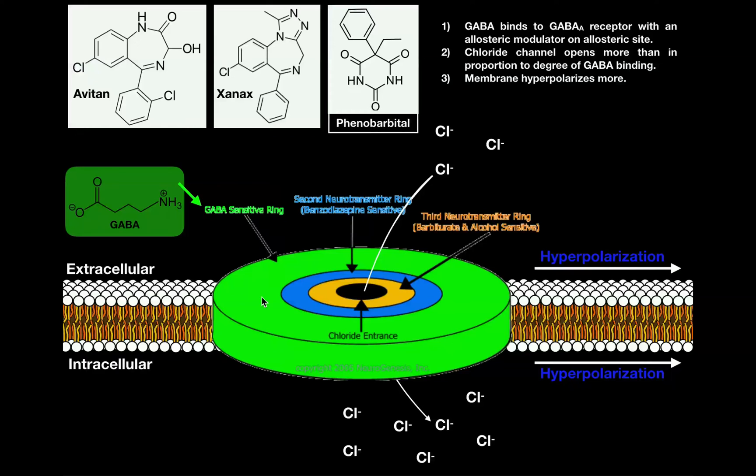The allosteric sites are at sites distinct from that. So, this blue area and this orange area, these are allosteric sites. And according to this picture, just a representation, the blue allosteric site is for benzodiazepines, and the orange allosteric site is for barbiturates and alcohol.